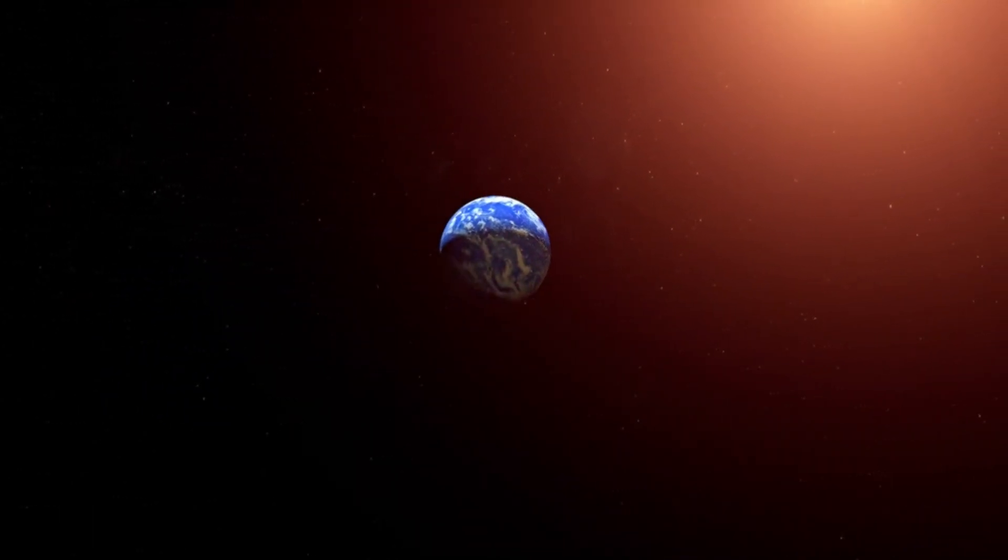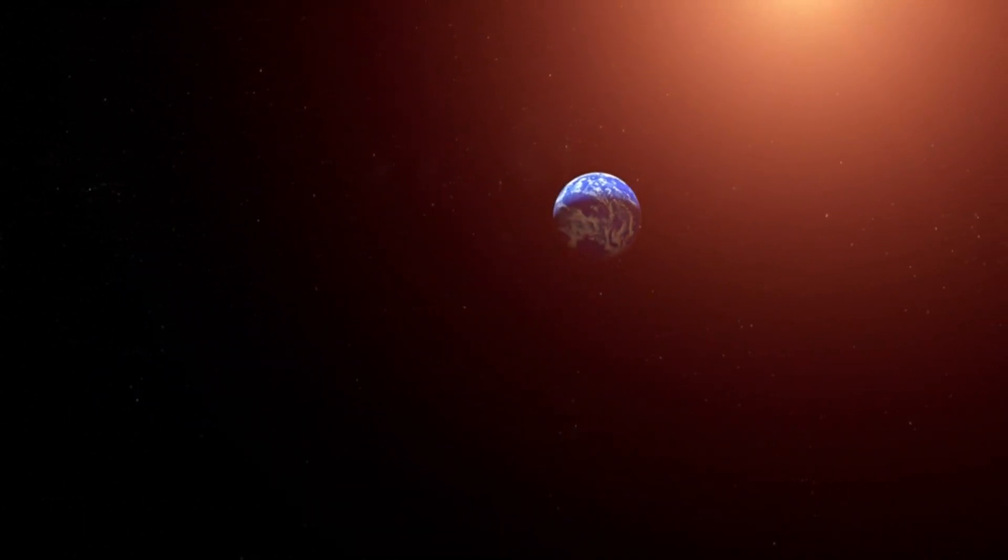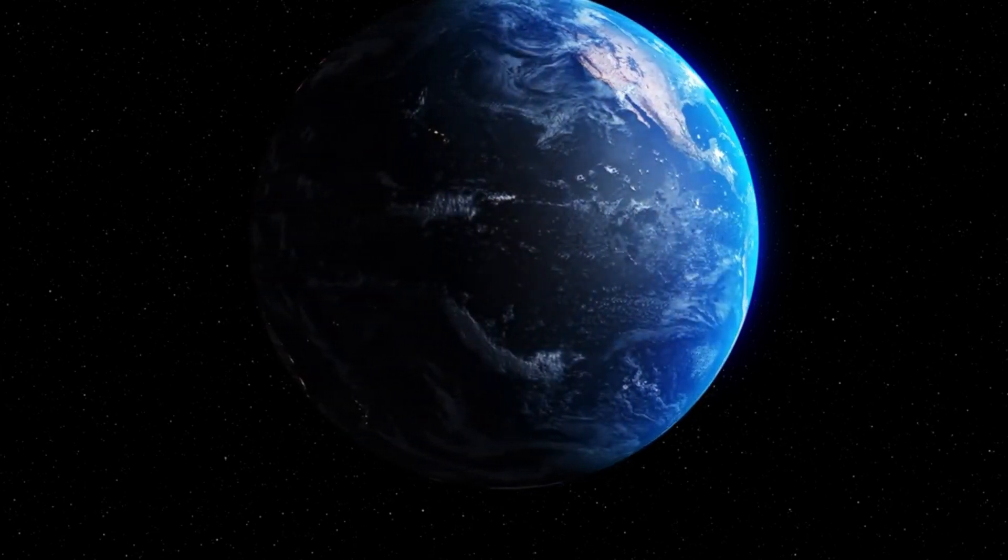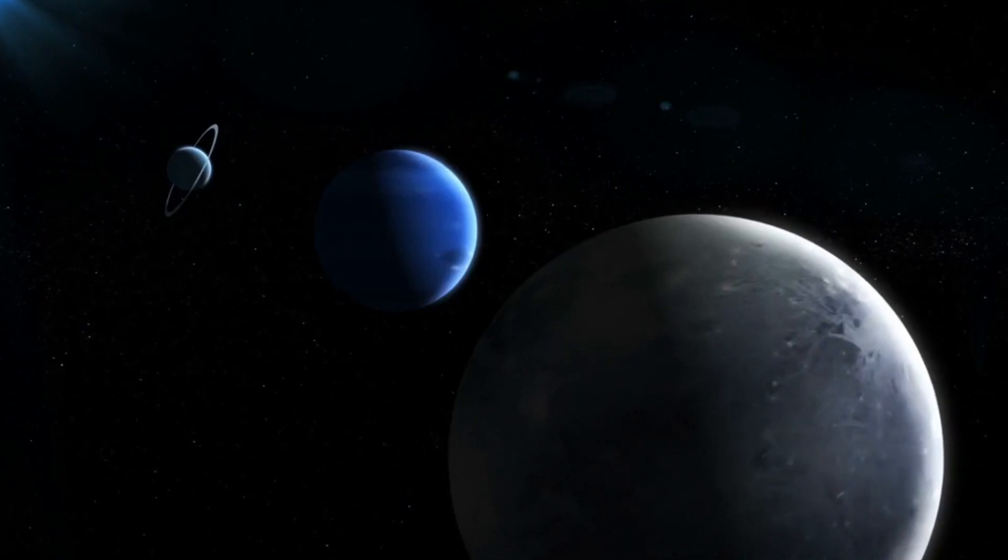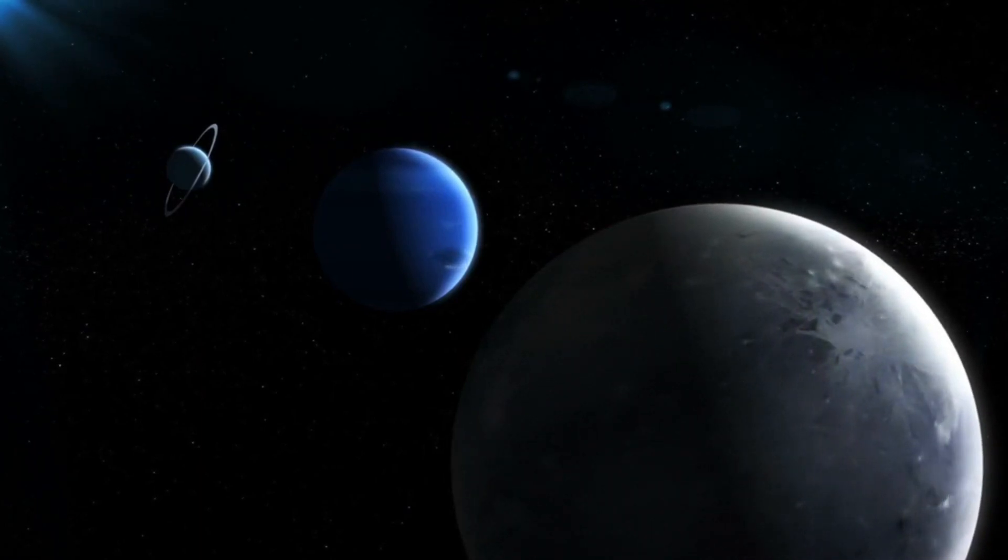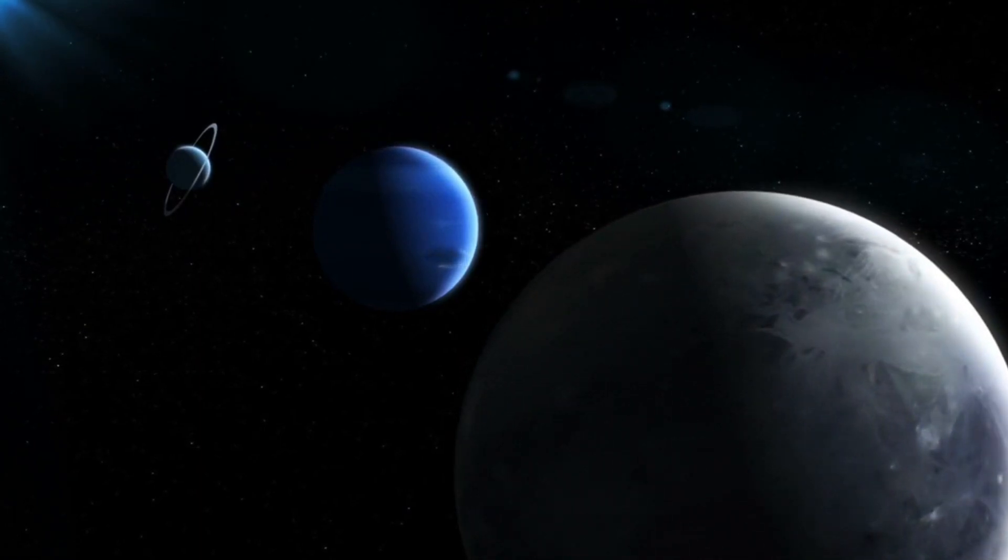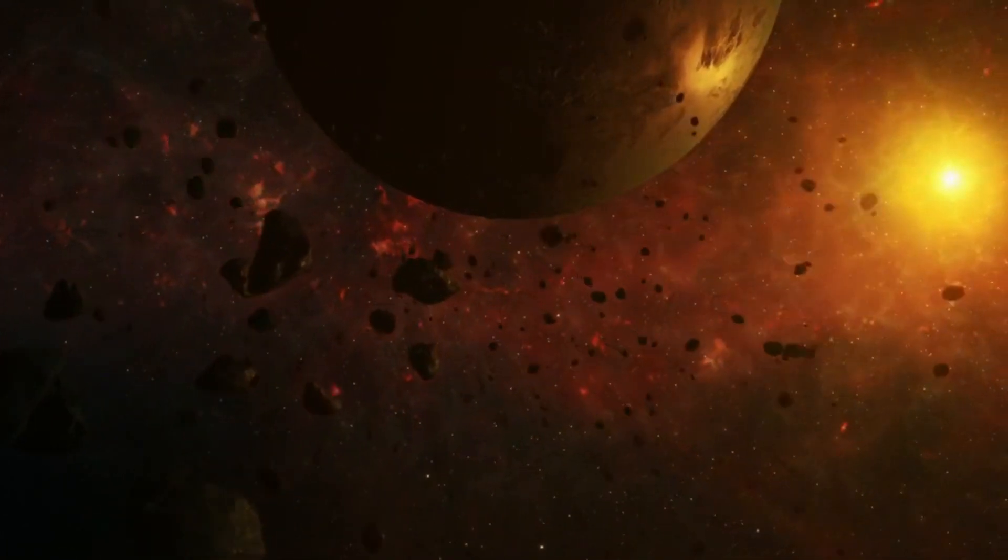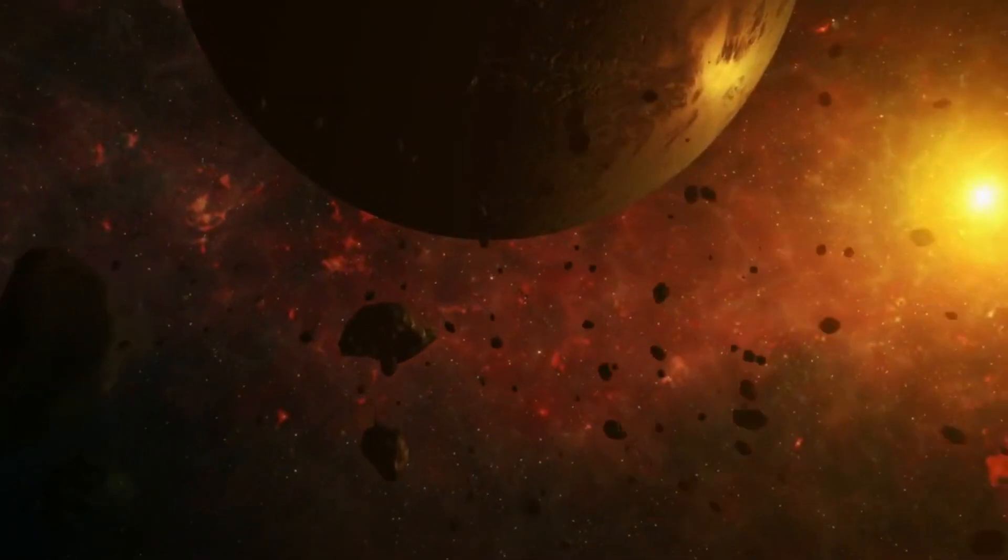Despite the reduced energy output of its host star, the planet is positioned perfectly within the habitable zone. What sets TOI-700E apart is its cloud-covered atmosphere. Webb's data suggests that these clouds could be composed of water or ammonia, potentially forming a thick shield that protects the planet's surface from harmful radiation. This protective layer might create a stable environment where life could thrive.